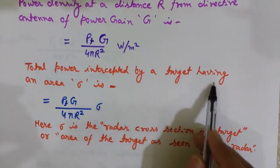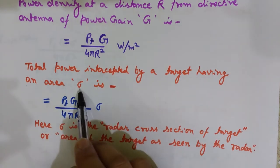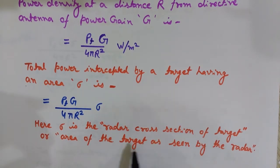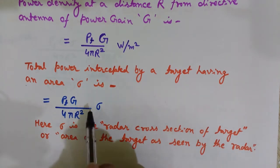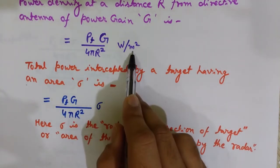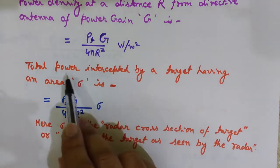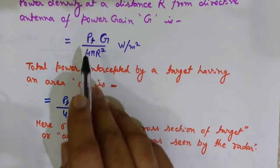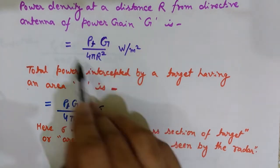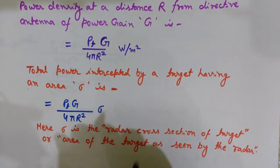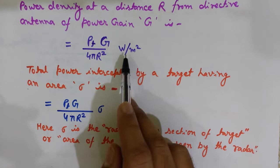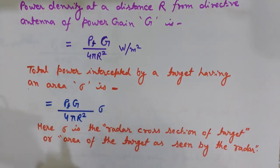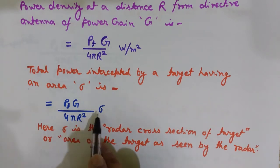The total power intercepted by a target having area sigma — where sigma is the radar cross section of the target, i.e., the area of the target as seen by the radar — is obtained by multiplying the power density (watts per meter square) by this area sigma. This converts it to watts, giving the total power intercepted by the target that we want to detect.